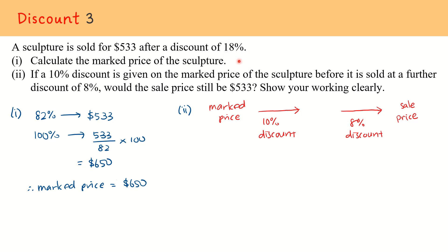I hope you have an idea of what the answer could possibly be. The answer should actually be no. A direct 18% discount is different from breaking it up into two parts of 10% followed by 8%, because there is a different base value each time that a discount is being given. Let's do some calculations to check that out.